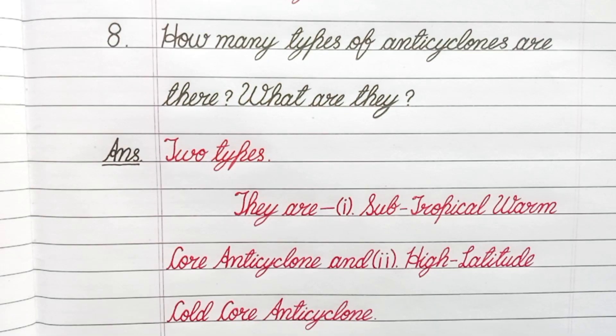Question number 8. How many types of anticyclones are there? What are they? Answer. Two types. They are subtropical warm core anticyclone and high latitude cold core anticyclone.